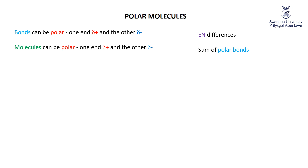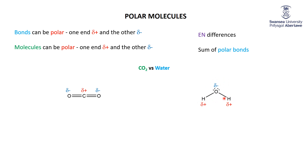A molecule cannot be polar if it does not contain at least one polar bond. The classic examples of polar versus non-polar molecules are carbon dioxide and water. Carbon dioxide has polar bonds — oxygen is much more electronegative than carbon, so the oxygens pull electron density away, making carbon slightly positive and each oxygen slightly negative. Water also has polar bonds, with oxygen more electronegative than hydrogen, making oxygen slightly negative and each hydrogen slightly positive. Yet carbon dioxide is non-polar while water is polar.